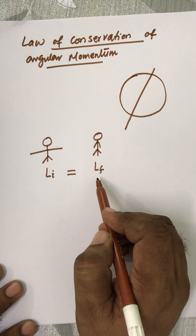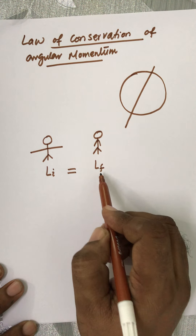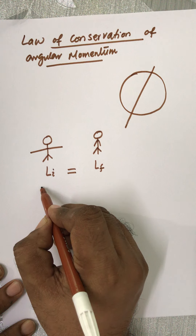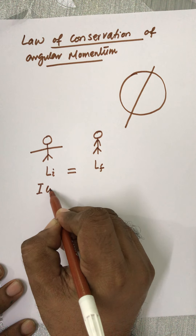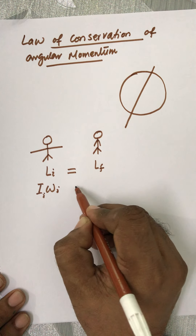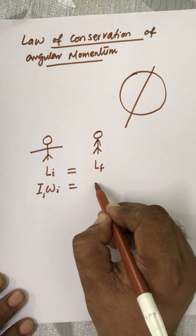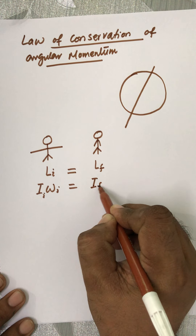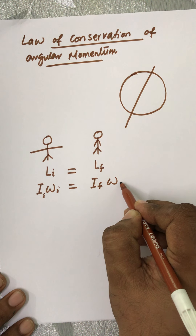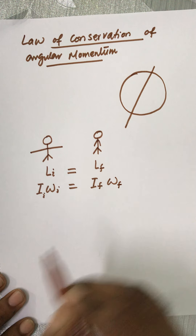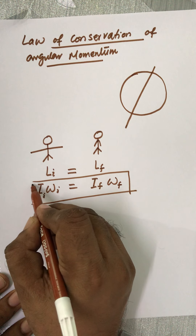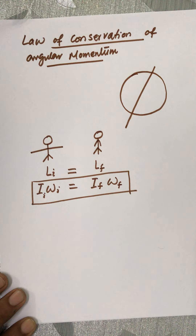This is called the law of conservation of angular momentum. We know that angular momentum is the product of moment of inertia and angular velocity. So the initial moment of inertia multiplied by initial angular velocity must equal the final moment of inertia multiplied by the final angular velocity. This is the mathematical representation of the law of conservation of angular momentum.